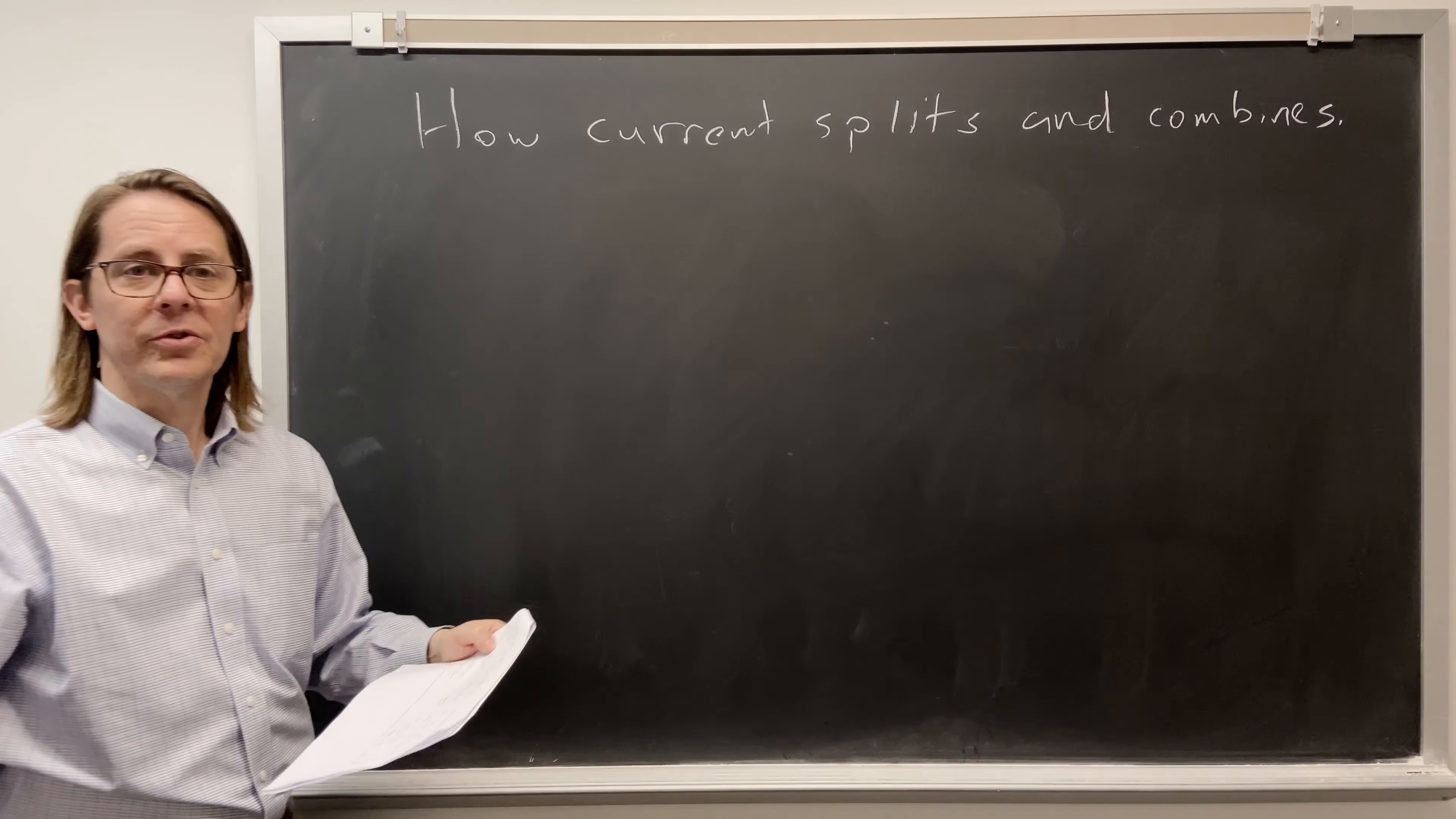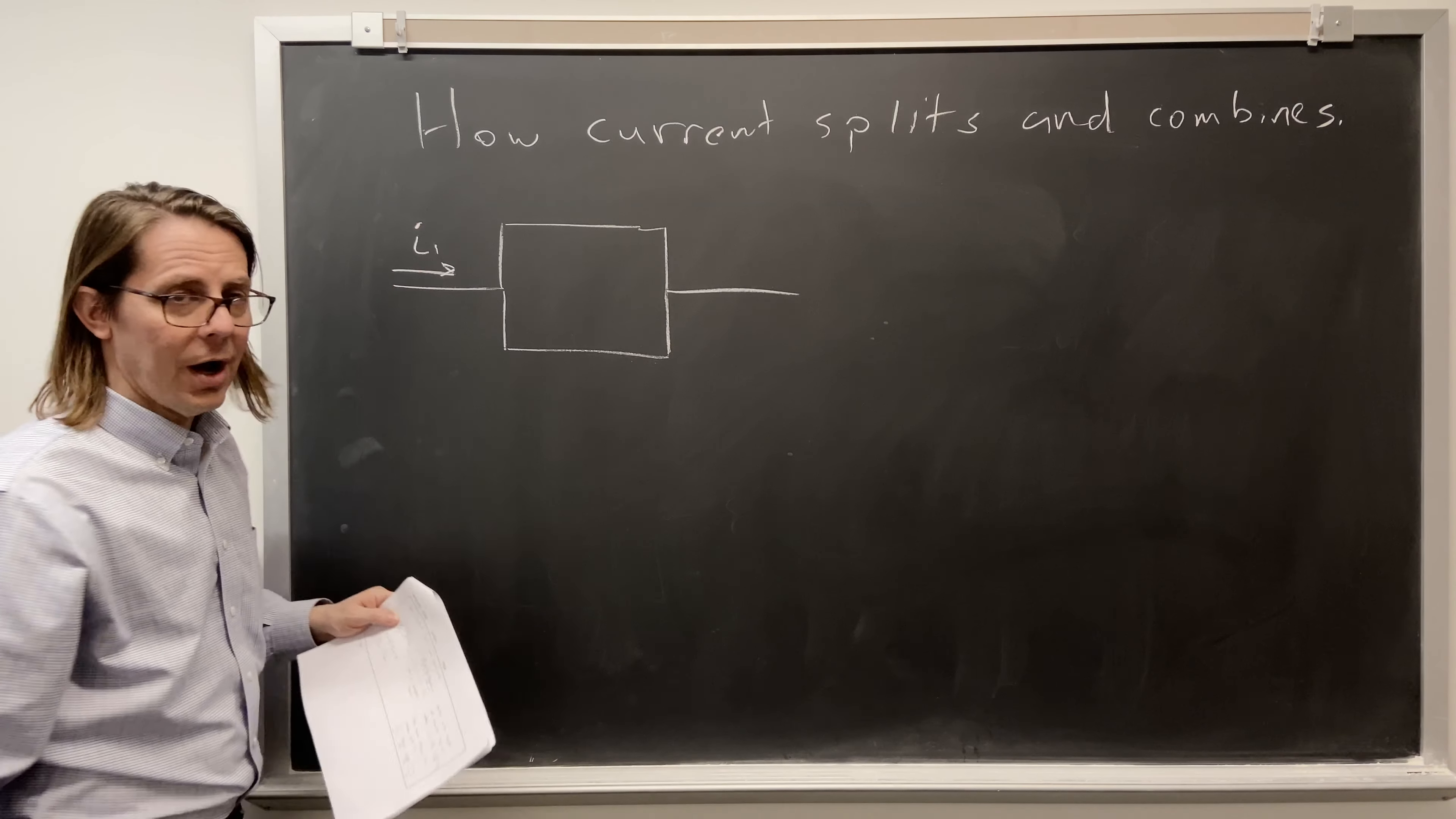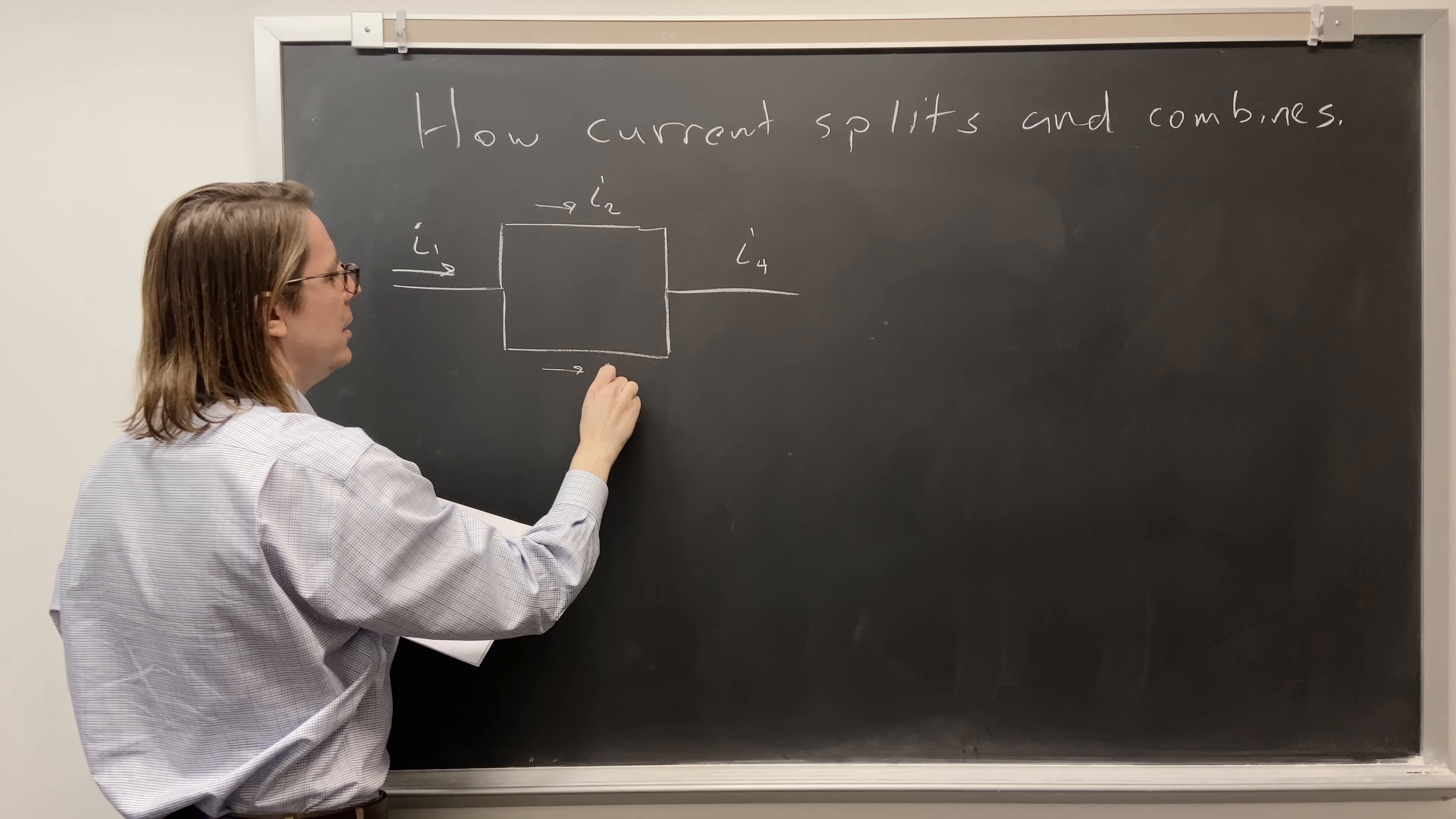Now you might ask, why would it split? Here's why. We're going to make it go through something that looks like this. For this discussion, we don't care about the battery that made the current go. We just say there is some current flowing right here called I1. And when it comes out, we would have some current here, I4. The current has to split up at this junction. If it's going this way, some goes to the top, I2, and some goes to the bottom, I3.